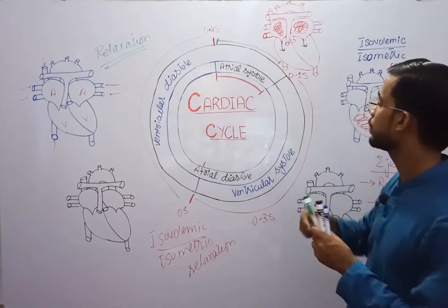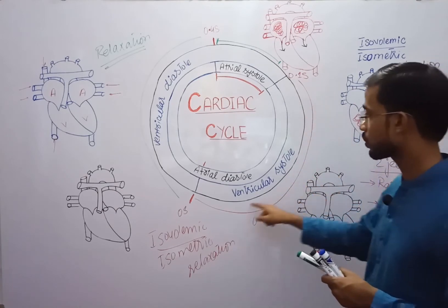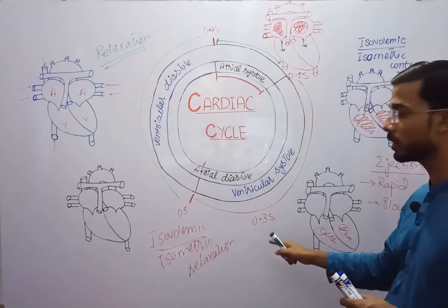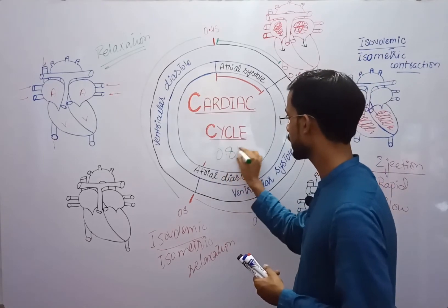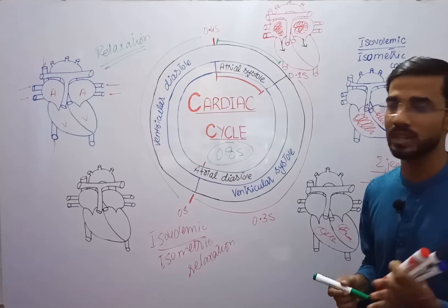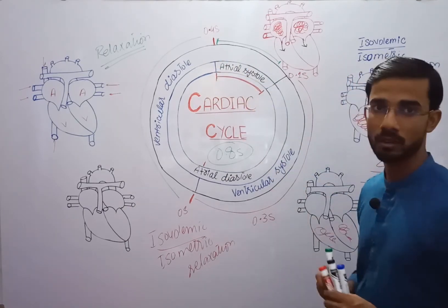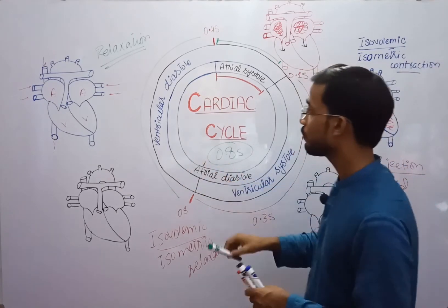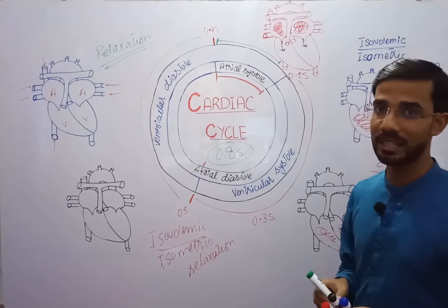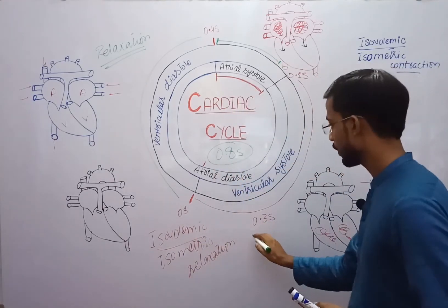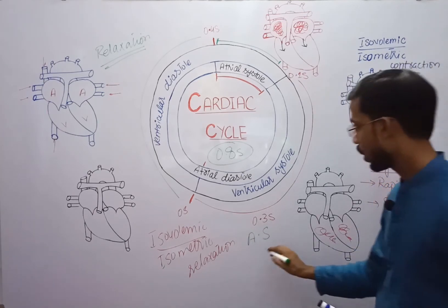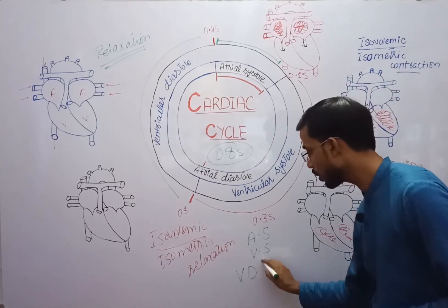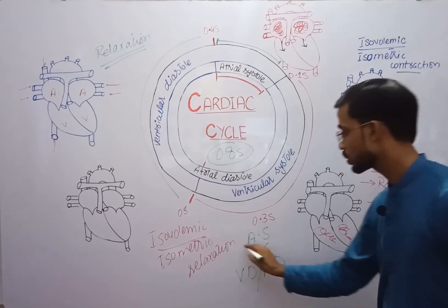To summarize: atrial systole takes 0.1 second, ventricular systole takes 0.3 second, and the joint diastole takes 0.4 second — totaling 0.8 second for one complete cardiac cycle. We consider three phases: atrial systole, ventricular systole, and the third phase where both ventricles and atria are in a relaxed state, also called ventricular or atrial diastole.